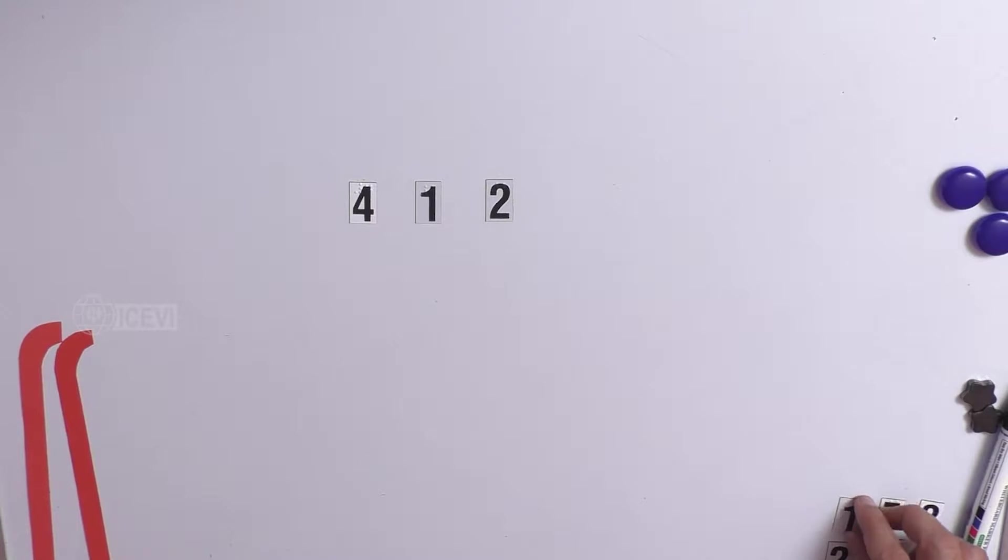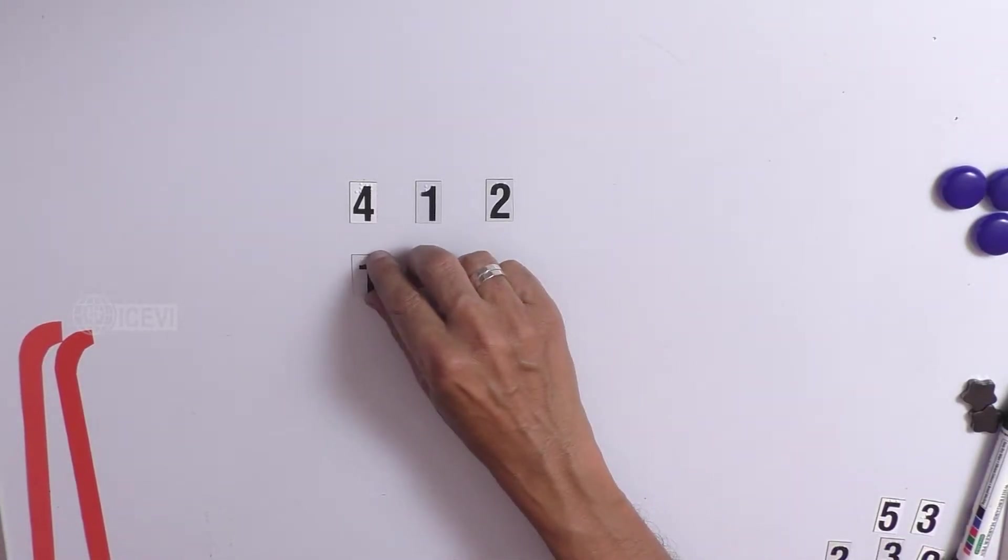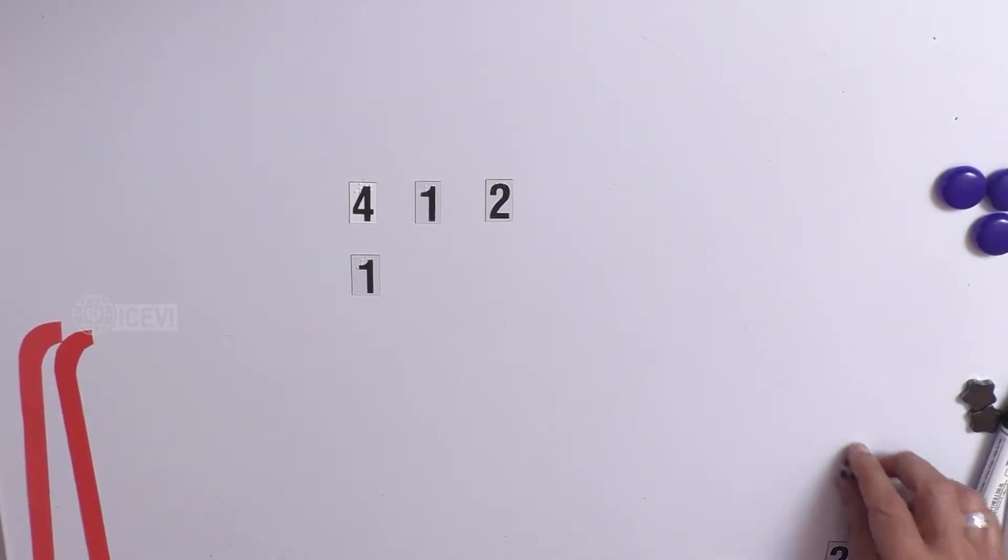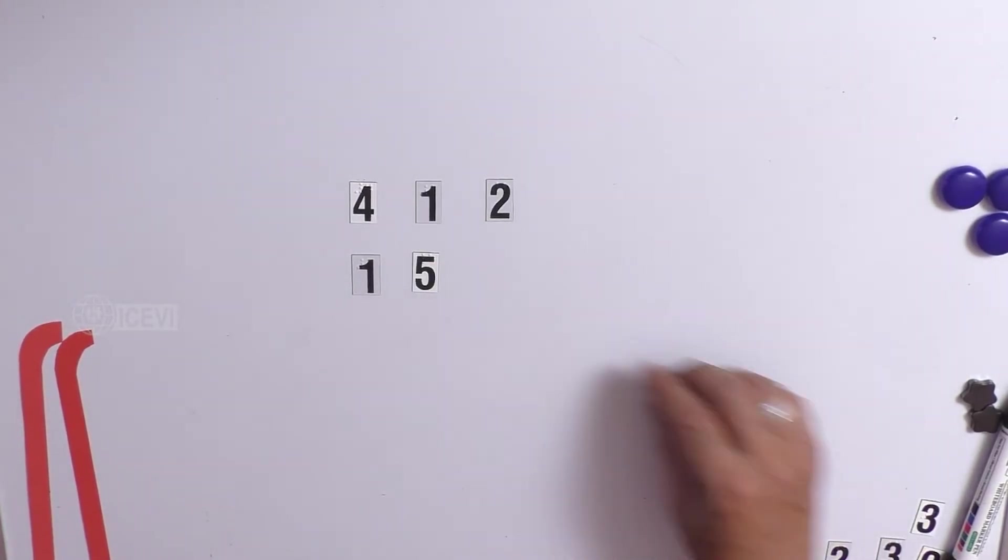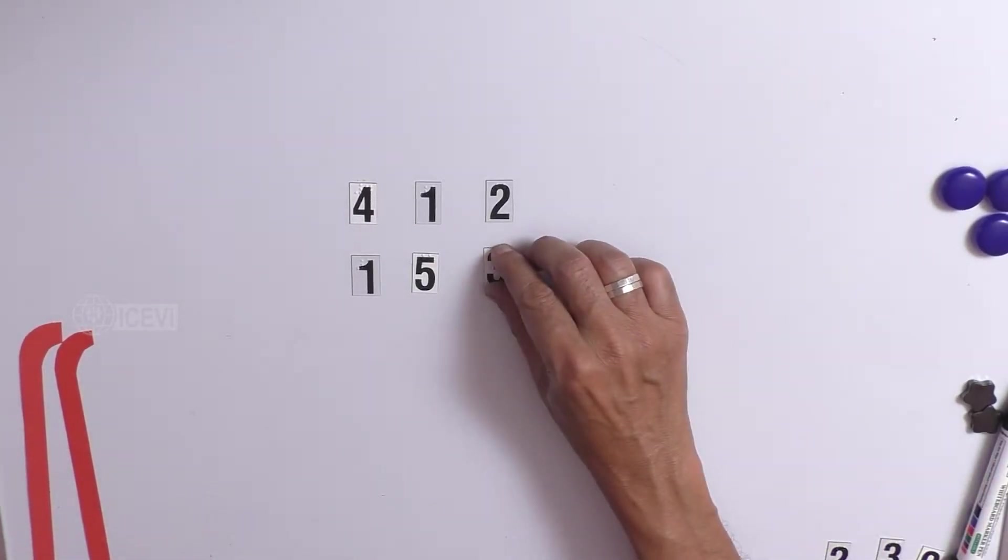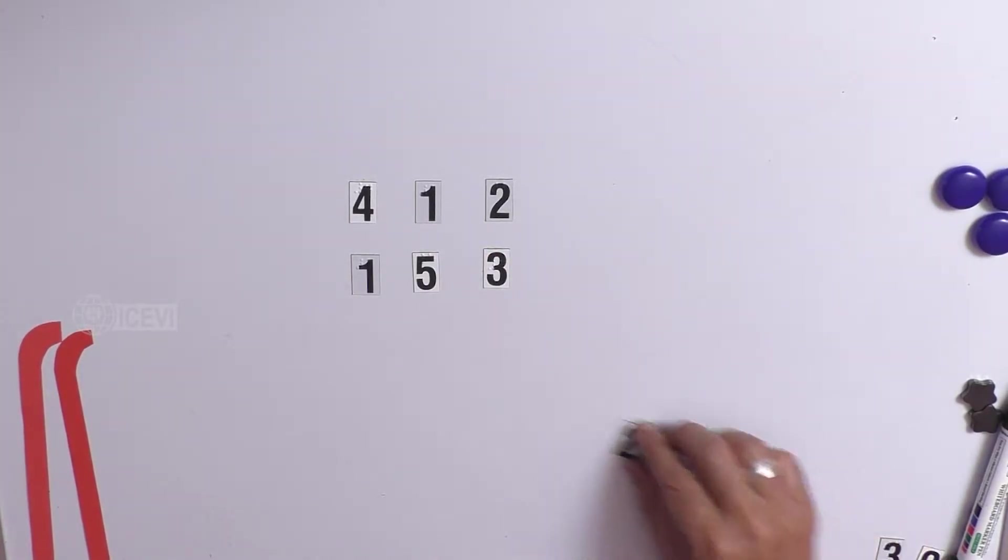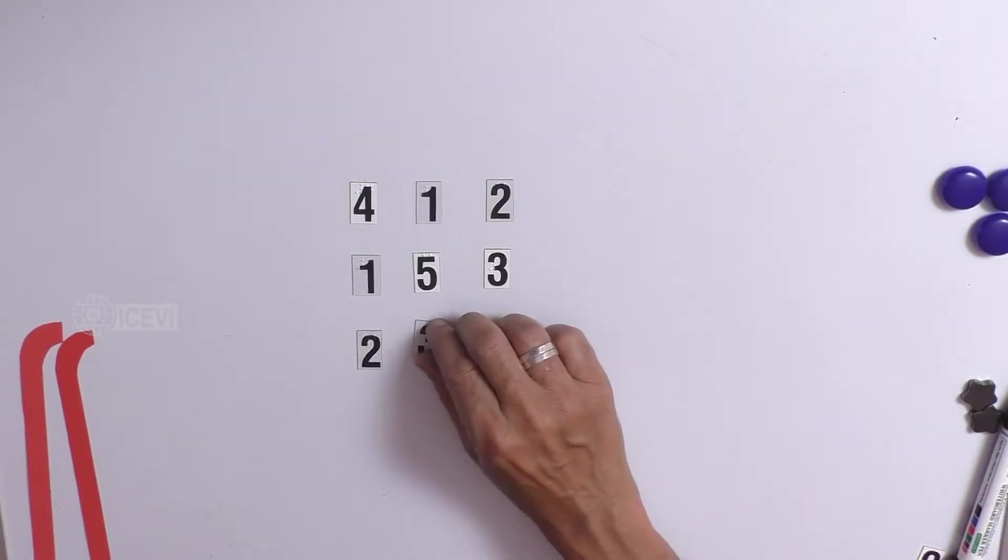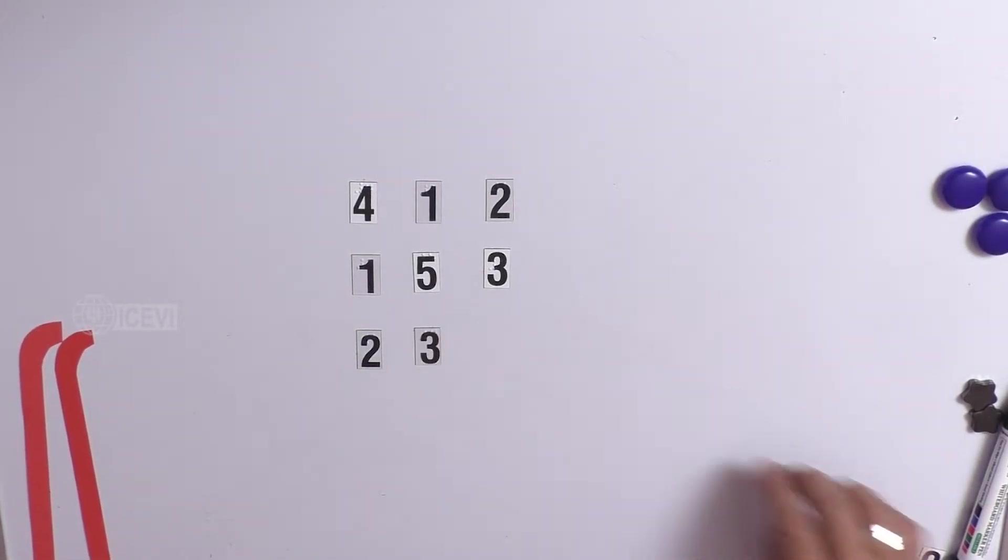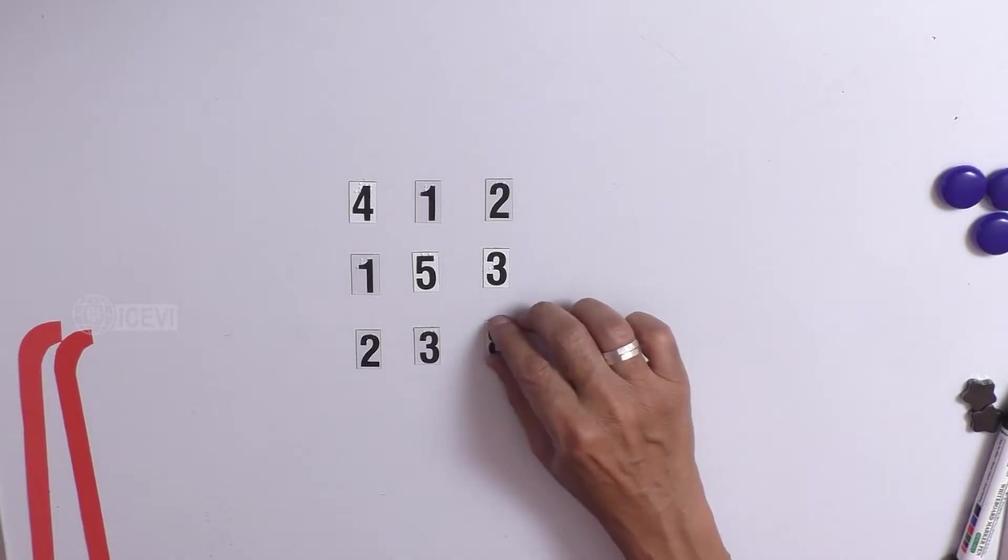Now, let us take the second row. Second row, let us assume that it is 1, 5 and 3. And the third row, let us assume that it is 2, 3 and 8.